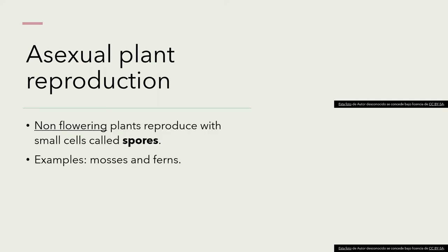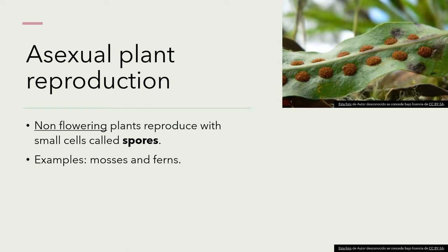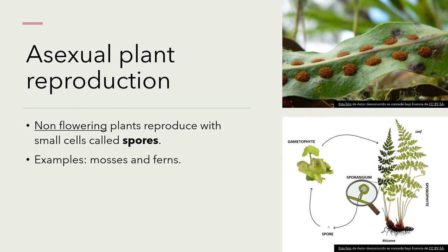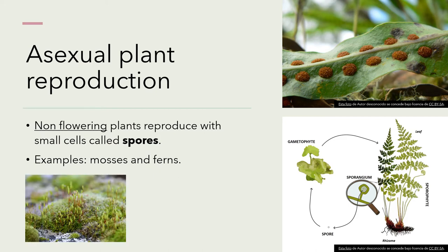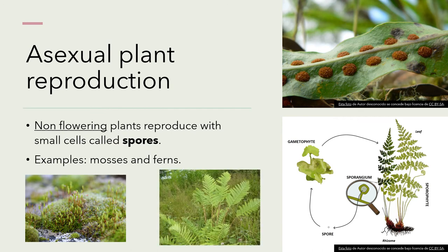Asexual plant reproduction. Non-flowering plants reproduce with small cells called spores, and two examples are mosses and ferns. These are the spores. This is an example of ferns and spore reproduction, and these are mosses and ferns.